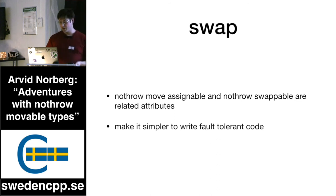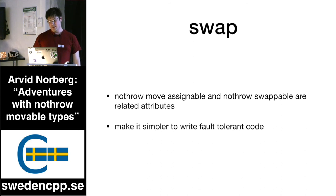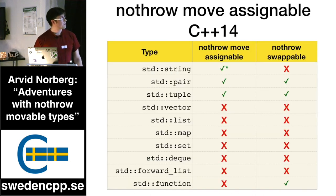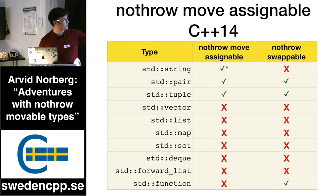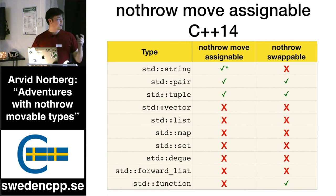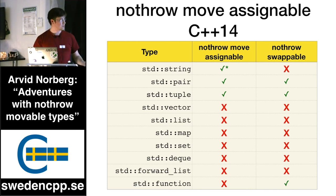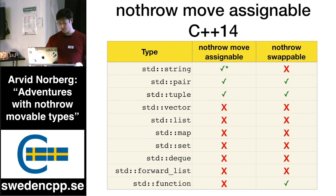If we look at what the standard containers and types look like for C++14: you have nothrow move assignable — no on a lot of them — and then nothrow swappable, which is basically whether a member swap function is declared `noexcept`. It's a little bit more sophisticated in C++17 with the swappable concept as well.